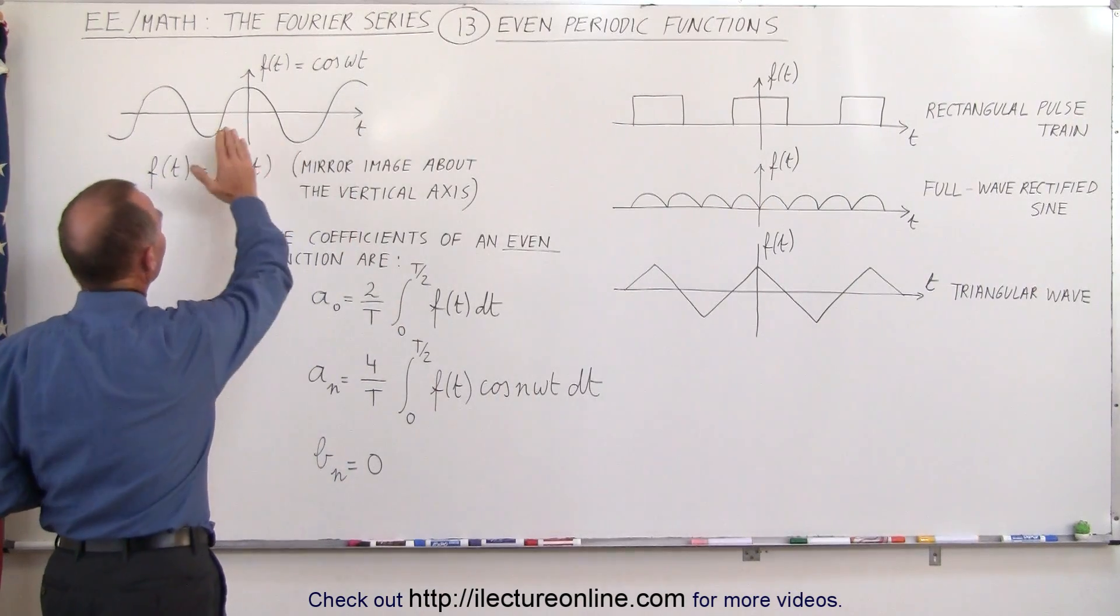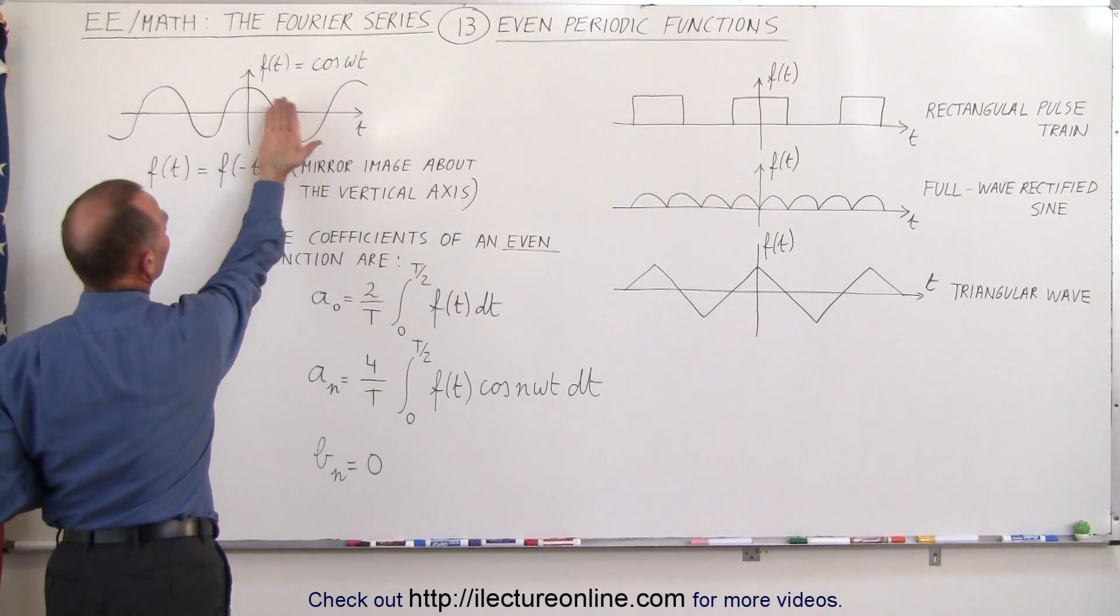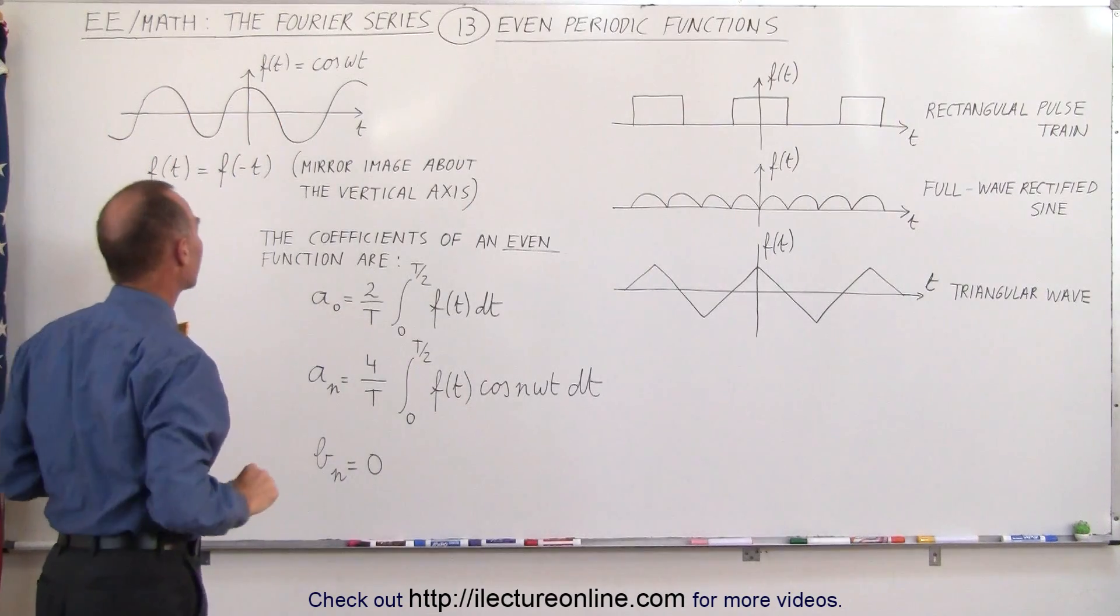In other words, it has a mirror image about the vertical axis. If we take this side of the function and flip it over here, we have an exact duplicate on the other side.